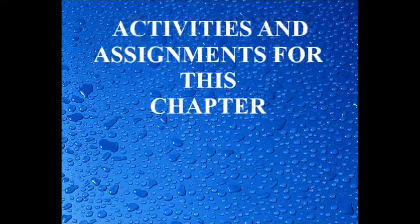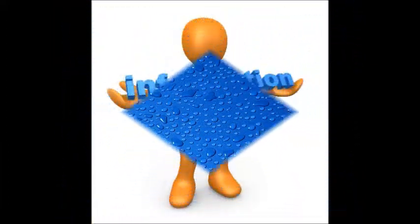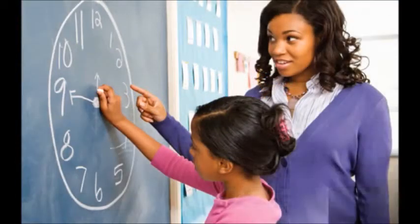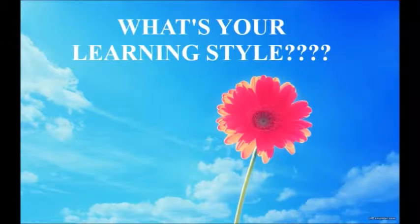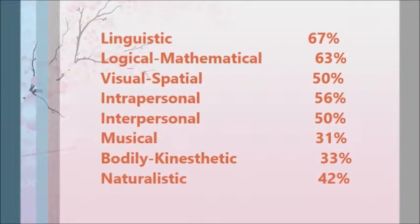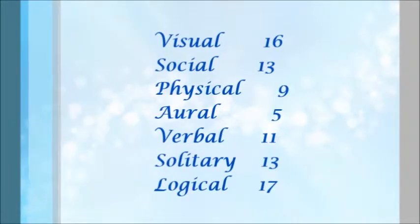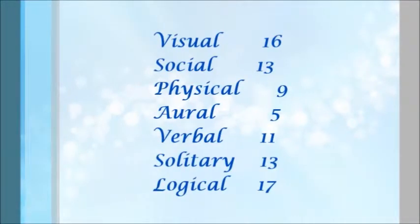Now we've learned our topic, so let's look at our assignments and activities. Information and interactions are really important for us. What's your learning style? I took two quizzes. My highest score on the first one is 67 and it says I'm a linguistic person — that means I'm able to explain complicated subjects. My highest score on the second one is in logical, which says I like using my brain for logical and mathematical reasoning.